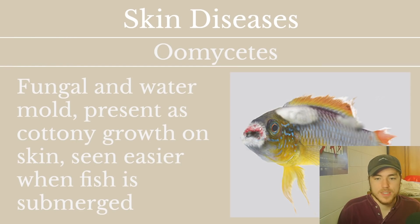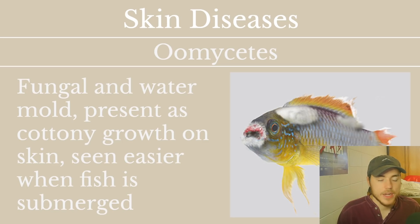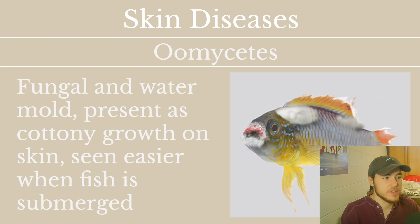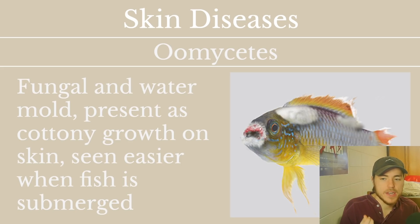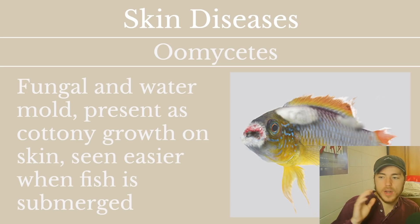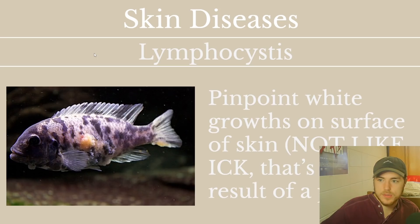Oomycetes are basically fungal molds and water molds that grow on the outside of the fish. They look somewhat cottony. They can be seen more easily when the fish is submerged — if you pull the fish out of the water, the mold may be less visible and more clamped on. When the fish is wet and underwater, these mold growths are much easier to see.